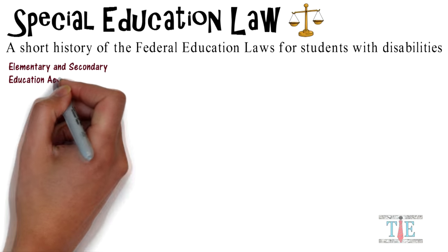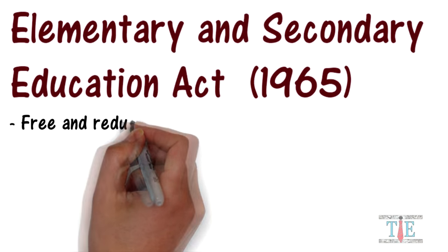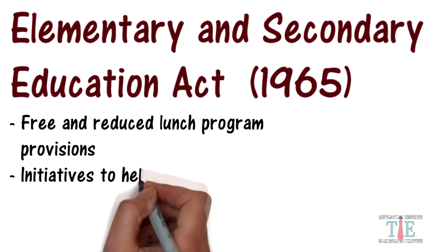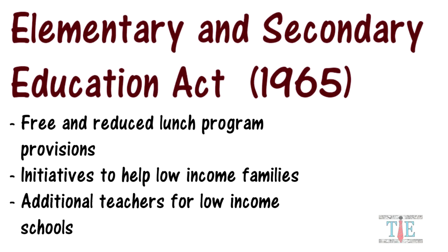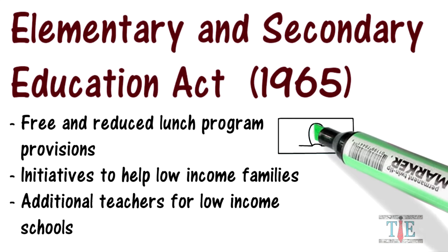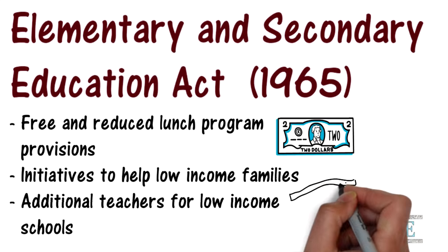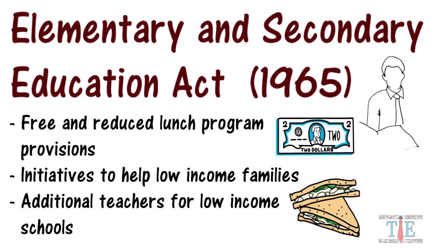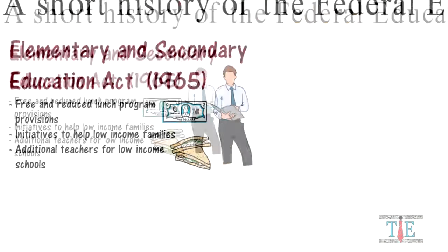First up, the Elementary and Secondary Education Act of 1965. This law includes provisions for a free and reduced lunch program, initiatives designed to help low-income families, and it supports an increase in the number of teachers in low-income areas. President Lyndon B. Johnson pushed for flexibility and funding to local districts. Lunch provisions are built upon the National School Lunch Program started in 1946 by Harry Truman. This law aimed to give educational and financial support to the children that needed it most.